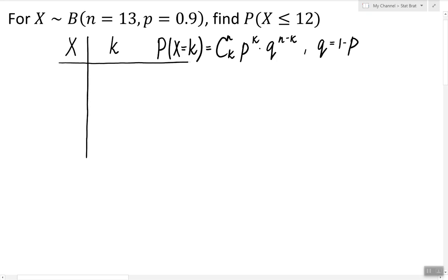K represents a possible value. In this case, it could be any number between 0 and 13 because there are 13 trials altogether, and the number of successes can be any number between 0 and 13.